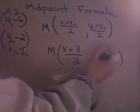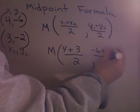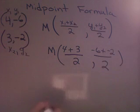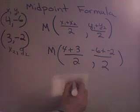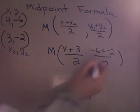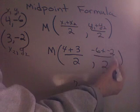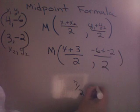4 plus 3. Okay. My y sub 1 was negative 6 plus y sub 2, which was negative 2. Now, I'm going to simplify this a little bit. 4 plus 3 is 7. 7 over 2 is the first point. Negative 6 plus negative 2 is negative 8. Divided by 2 is negative 4.